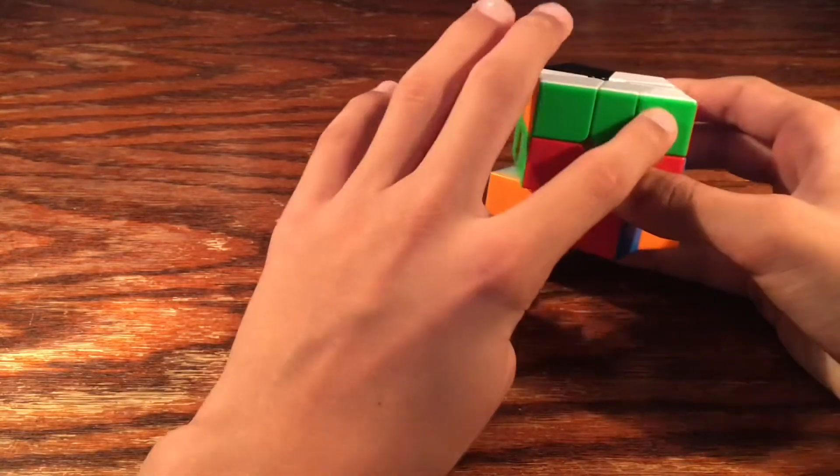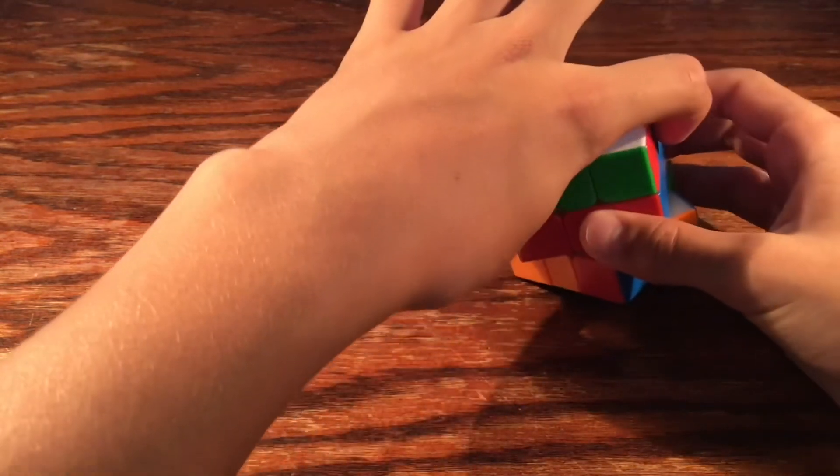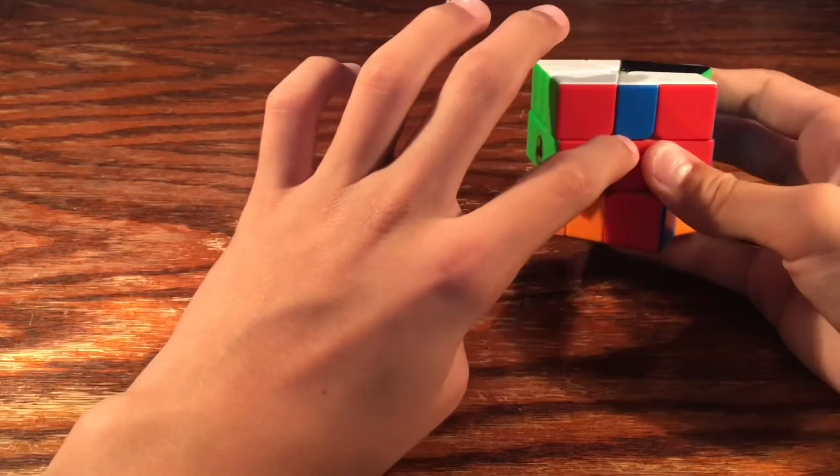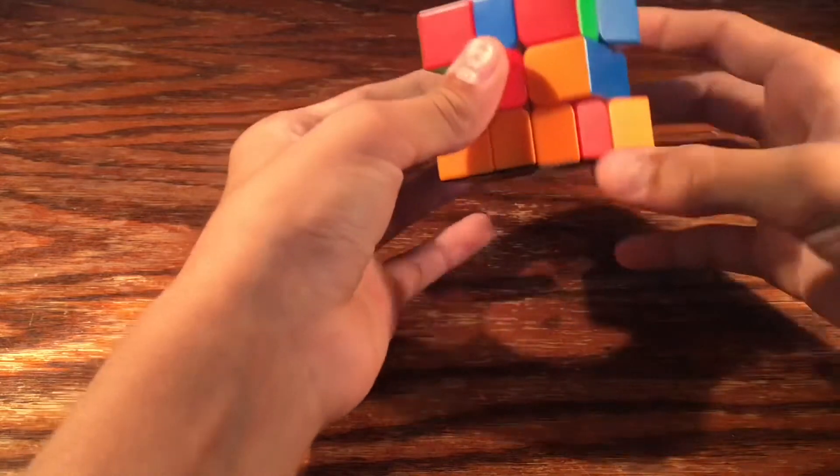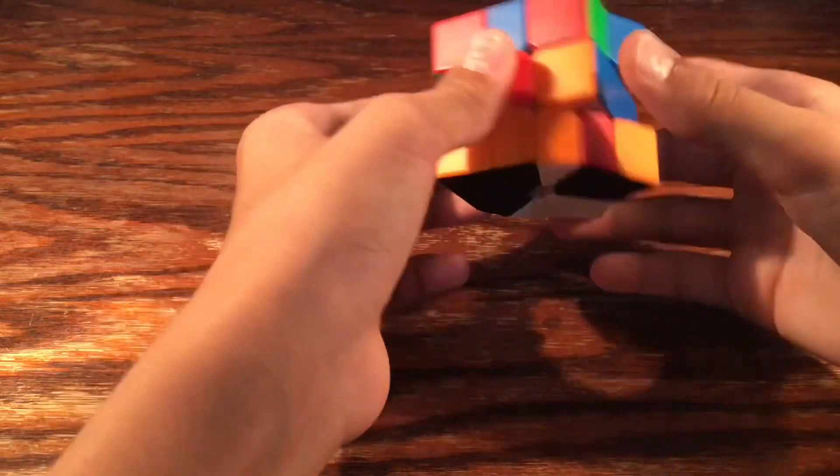And then we would put this blue piece right here, and then take it over like that, so it's like this. And we'd take it up, and then we see we have these three edges on the bottom.